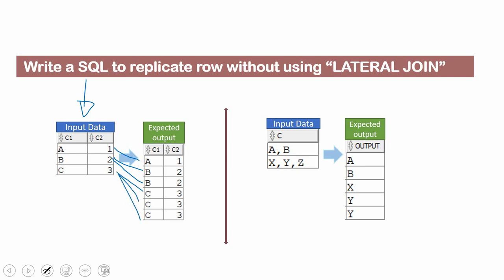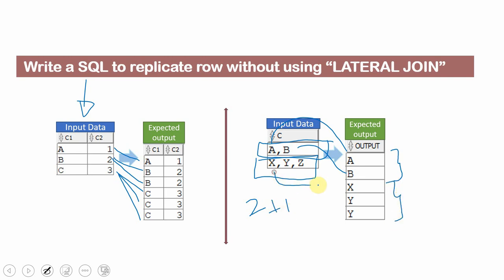In the second example, the same replication logic applies, but we are going to replicate based on the number of commas. For example, if there is one comma, we replicate that row two times, and then extract the character based on position — extracting A in the first row, B in the second row. Similarly, for XYZ with two commas, we replicate three rows and extract X, Y, and Z respectively.